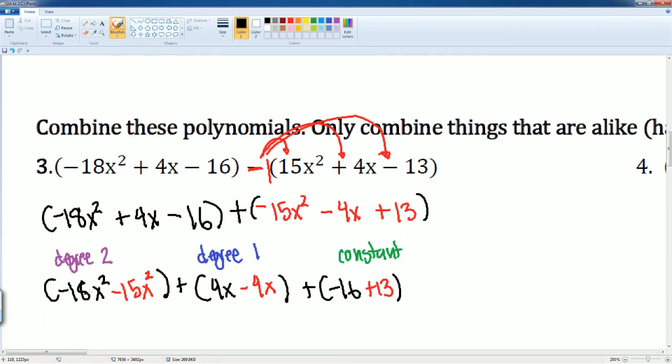Negative 18 minus 15. Okay these are just two negative numbers together. So this should be negative 33x squared, because there are two negatives together. So it becomes a bigger negative plus 4x minus 4x. It becomes 0x. Then lastly you have negative 16 plus 13. That is going to be negative 3.